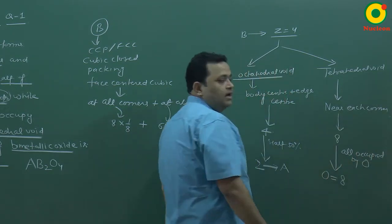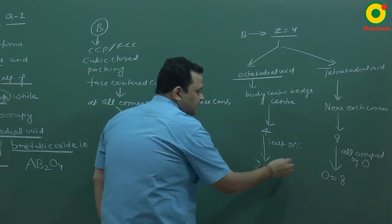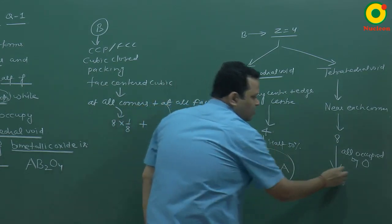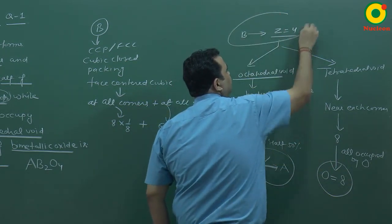This means octahedral voids half, 50%, 2 atoms are coming in A. And oxygen atoms all are occupied by oxygen. This means tetrahedral voids is 8. Now, we will combine it. A is 2, oxygen is 8 and B is 4.